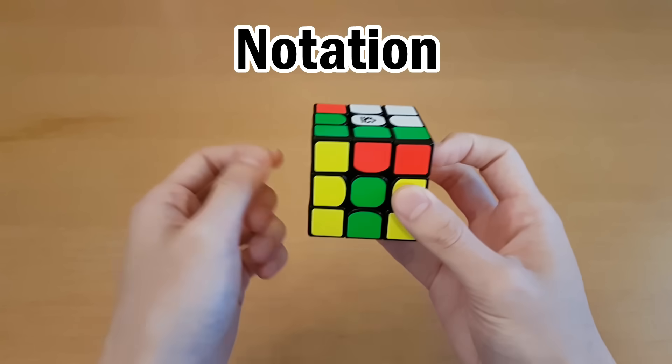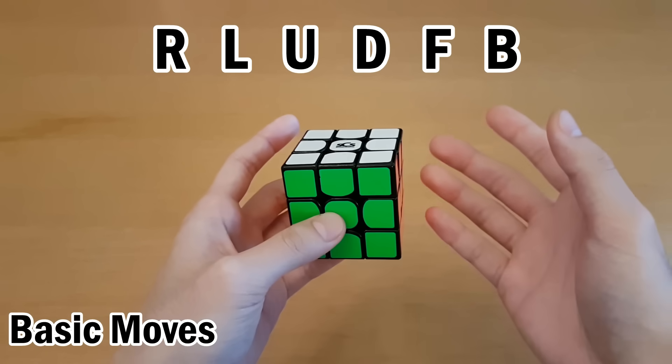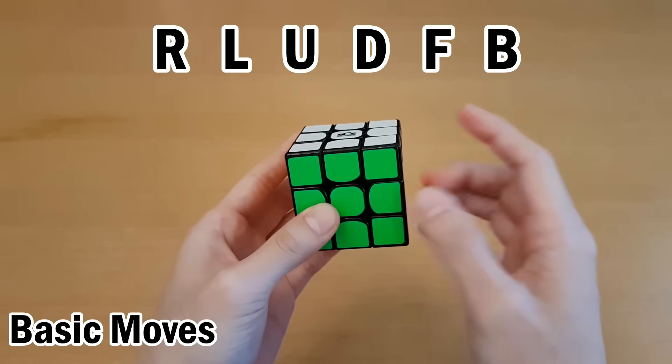What moves to make on the Rubik's Cube is described by cube notation. The most common letters you'll see are these ones, and they stand for right,